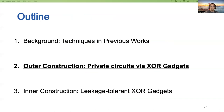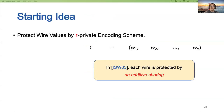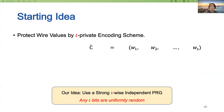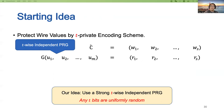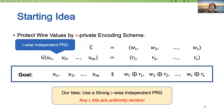We first discuss our outer construction: a T-private circuit via XOR gadgets. Suppose C is a circuit that computes a function F. In ISW03, the construction protects each wire value by computing an additive sharing. Our idea is to use a strong T-wise-independent PRG to protect these values. Concretely, suppose G is a strong T-wise-independent PRG that takes U₁ to Uₘ as input and outputs R₁ to Rₛ. We mask each wire value Wᵢ by Rᵢ. The goal is to compute Wᵢ XOR Rᵢ. Together with U₁ to Uₘ, this can be viewed as an encoding of the wire values.